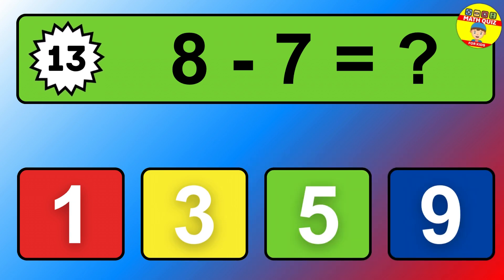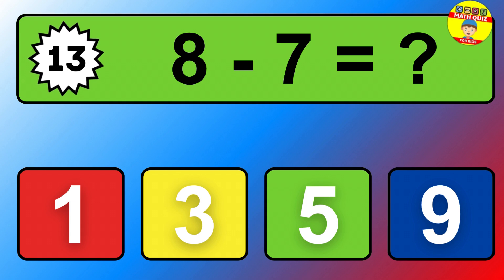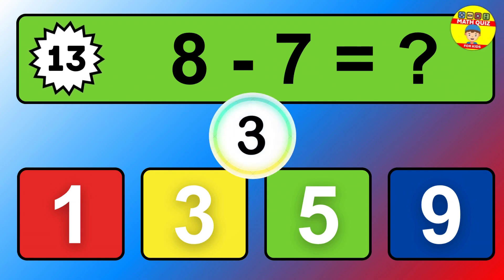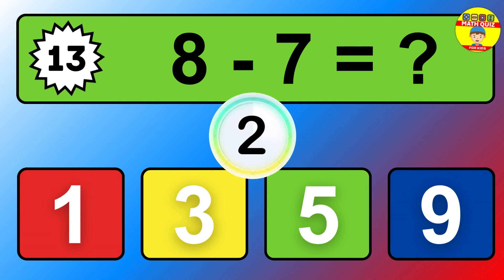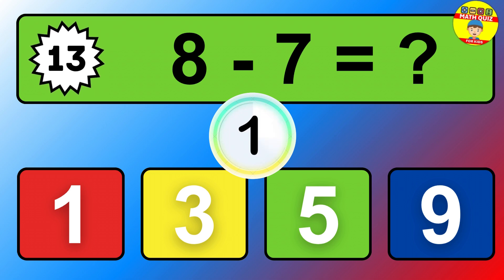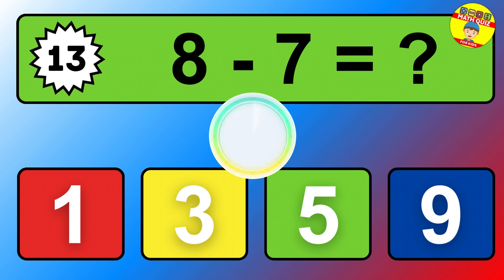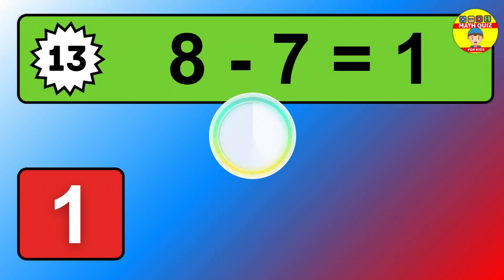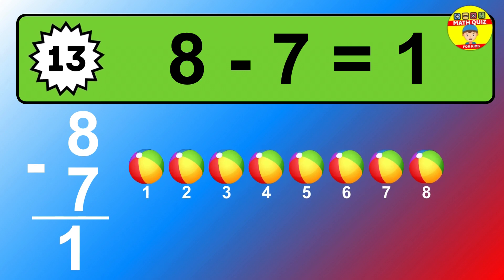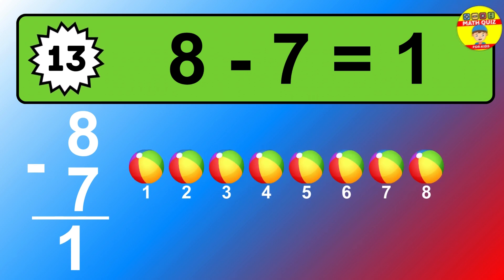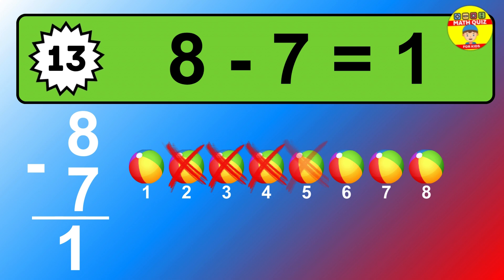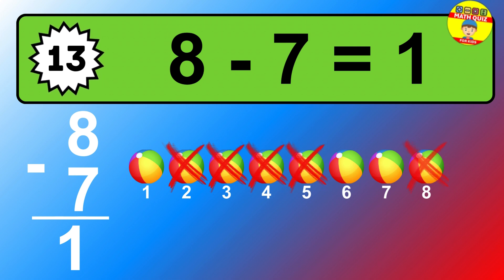Question thirteen: eight minus seven equals what? So the answer is eight minus seven is one. Let's count it. One.